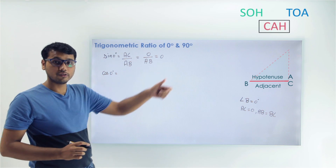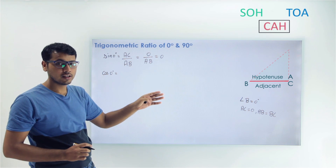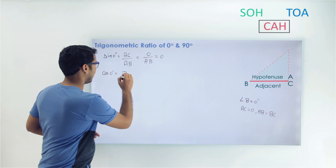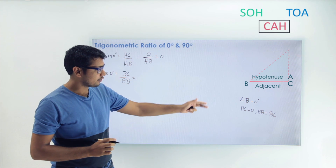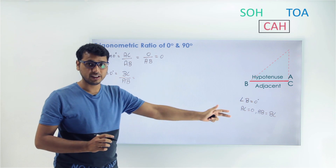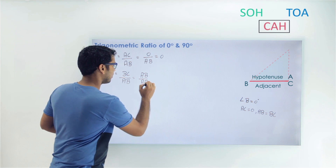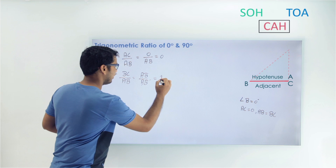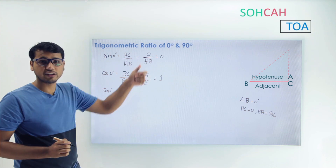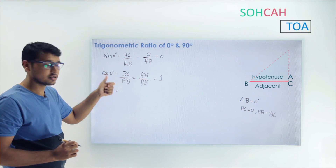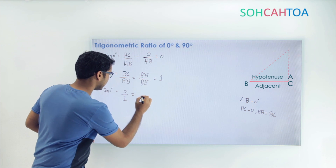Now cos of 0 degrees: cosine is adjacent upon hypotenuse, so the value is BC upon AB. Since when angle B equals 0 we have AB equals BC, we can write AB upon AB, and cancelling gives a value of 1. So cos 0° = 1. Similarly, tan of 0 degrees can be found by dividing sine by cosine: 0 divided by 1 equals 0.